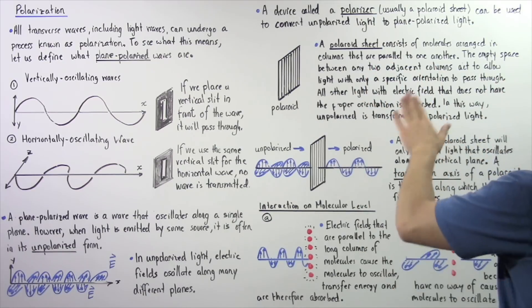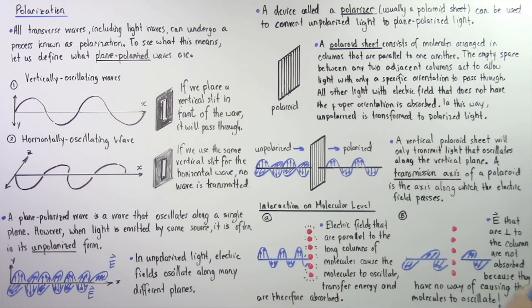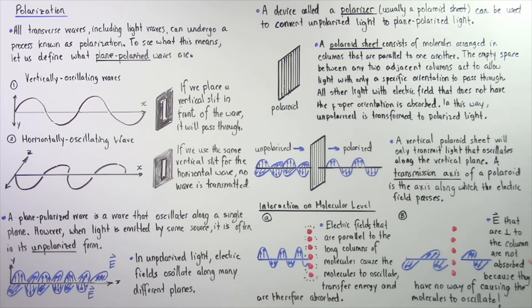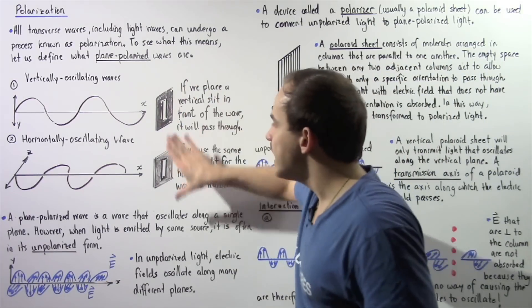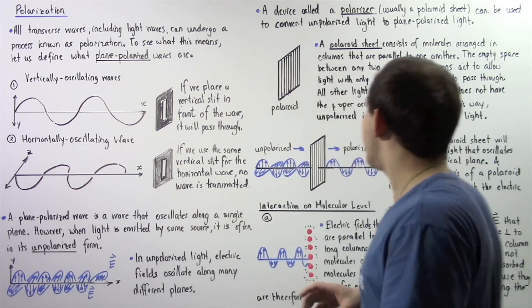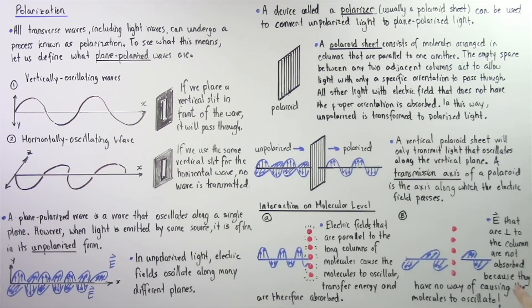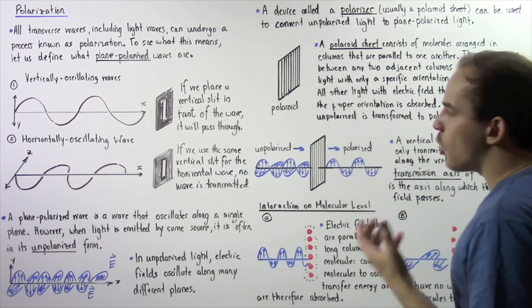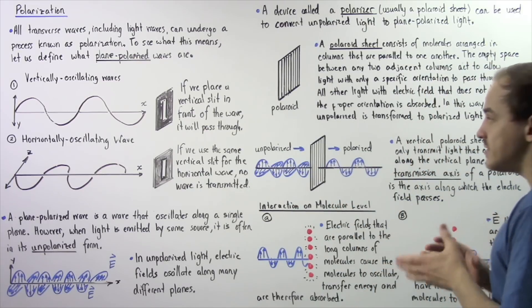A polaroid sheet consists of molecules arranged in columns that are parallel to one another. The empty space between any two adjacent columns acts to allow light with only a specific orientation to pass through — in the same way as discussed in Diagrams 1 and 2. All other light with electric fields of different orientations is absorbed, transforming unpolarized light into plane polarized light.